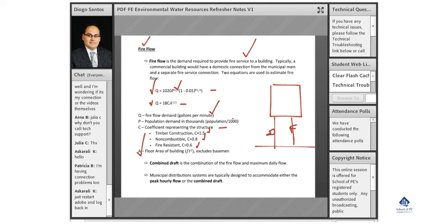A is the floor area of your building excluding the basement. The combined draft is a combination of fire flow and max daily flow, so you can service a fire and also your max daily flow. Municipal distribution systems are typically designed to accommodate either peak hourly flow or combined draft.